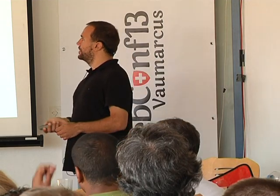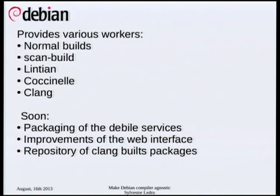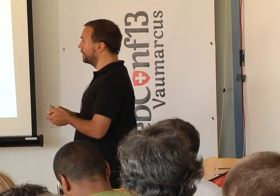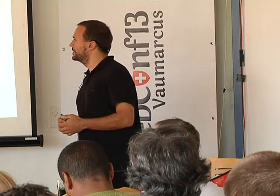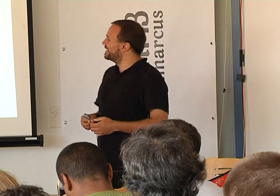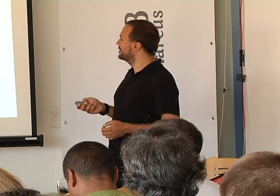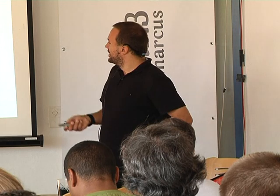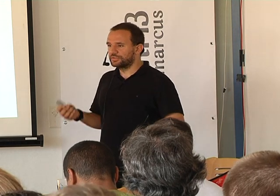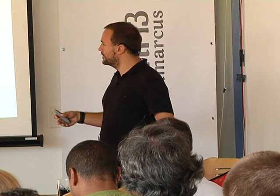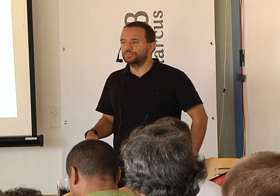This infrastructure produces results from various workers: normal builds with GCC, ScanBuild or Clang Analyzer for static analysis of C and C++ code, Lintian checks, Coccinelle — which is used by the Linux kernel and developed by Iril and Parisys in France, a kind of static analyzer. And Clang, which is being deployed today. We still need to do the packaging of Debild, improve the website — currently the Debild web interface really needs work on usability — and publish the binaries produced.